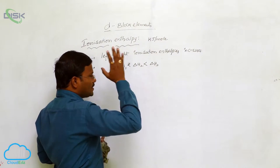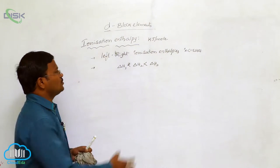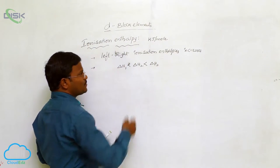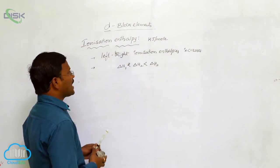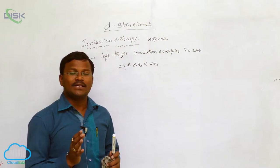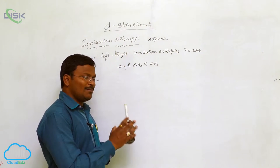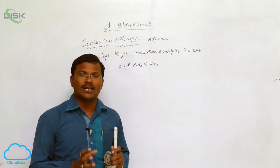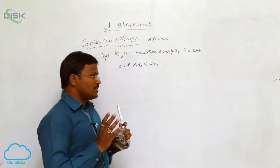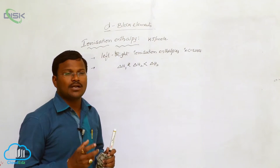Similarly, to eliminate the third electron in the same atom, we have to use a huge amount of energy compared to the second electron. So delta H1 is less than delta H2 is less than delta H3, expressed in kilojoule per mole. One more factor which influences ionization enthalpies of d-block elements is stability — more stable electron configuration. Some elements exhibit more stable electron configuration due to half-filled or fully-filled d-orbitals, so to eliminate an electron from such atoms we have to use additional energy.